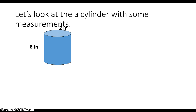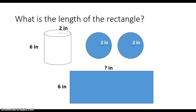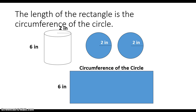So if I wanted to look at a cylinder with some measurements and take it apart, the radius is two inches for both of my circles, and the height is six inches. If I wanted to find the surface area, I'm missing one dimension — I can find the area of the top and the bottom, but to find the area of the rectangle is going to be a little tricky. What is the length of the rectangle? Well, it's the circumference of the circle. We find the circumference of the circle by multiplying diameter times pi. So what's the diameter of the top and bottom — our bases?